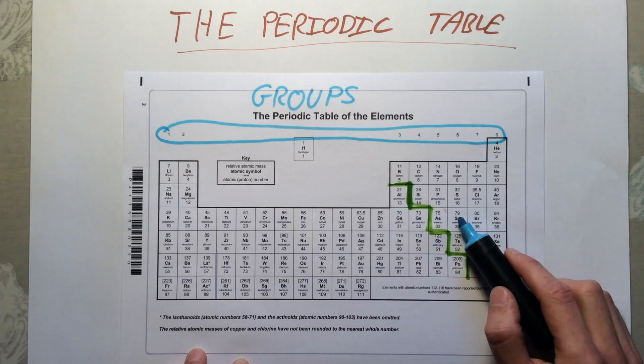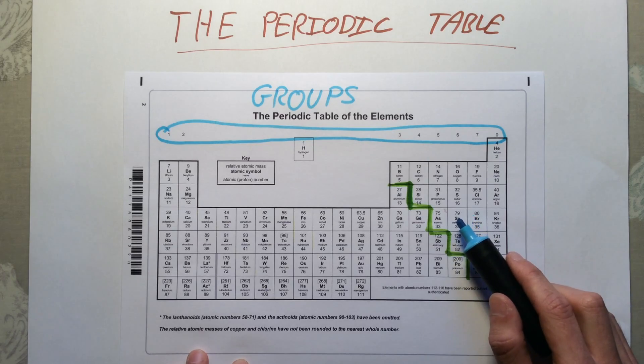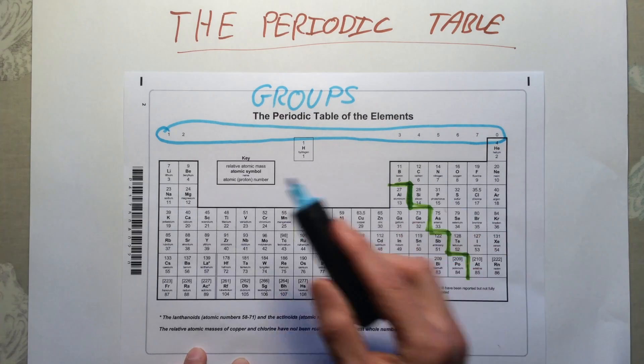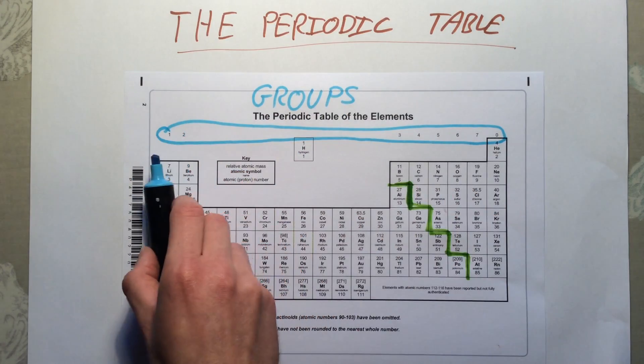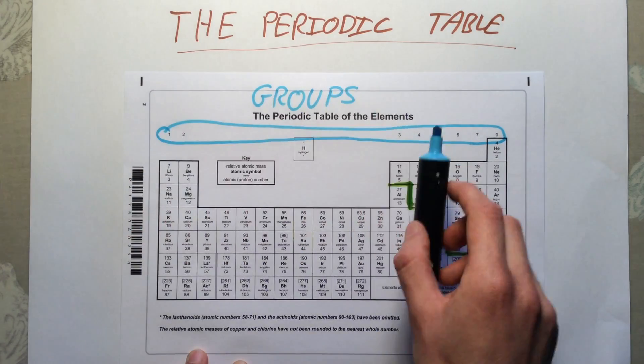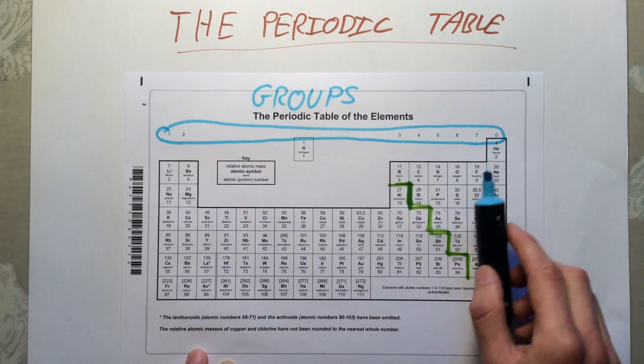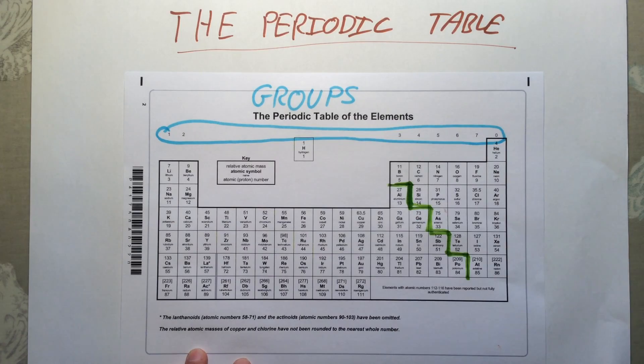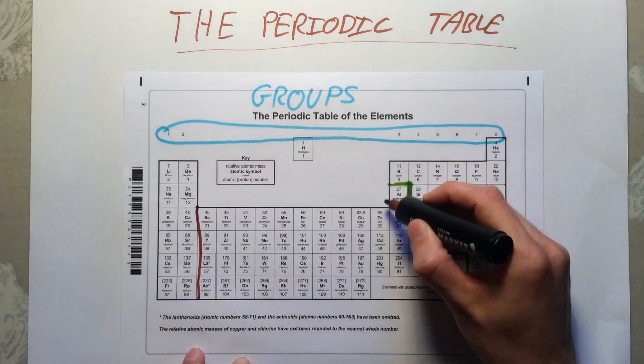Selenium is in group six, therefore it will have six electrons in its outer shell, and that gives us a lot of information about how the elements are going to react. Groups are the columns of the periodic table. We count on the top, we go one, two, we jump over this group of metals here, we go three, four, five, six, seven, zero.